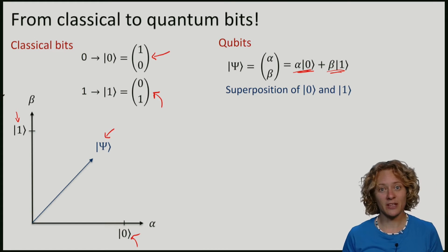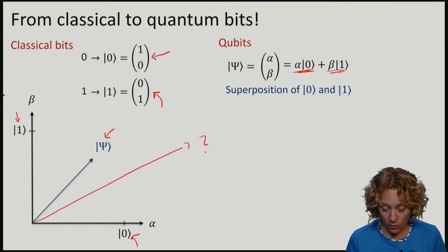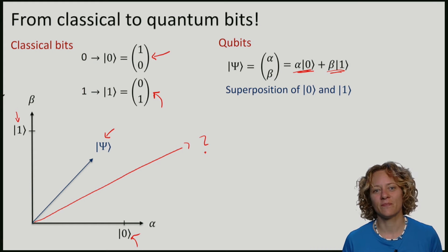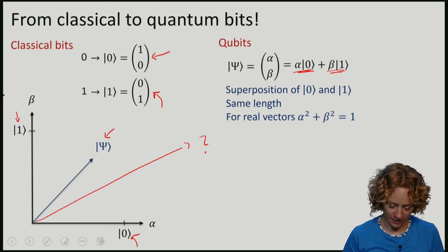You are maybe wondering if any vector can be a qubit. For example, could this vector also be a qubit? We will make a demand, namely that the length of the qubit vector is still the same as the length of the classical vectors. For classical bits, we have taken vectors which have exactly length 1.